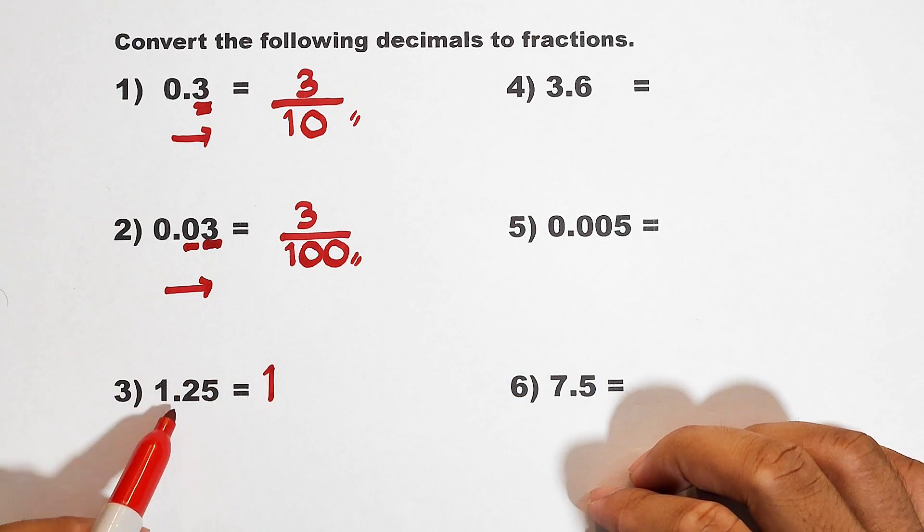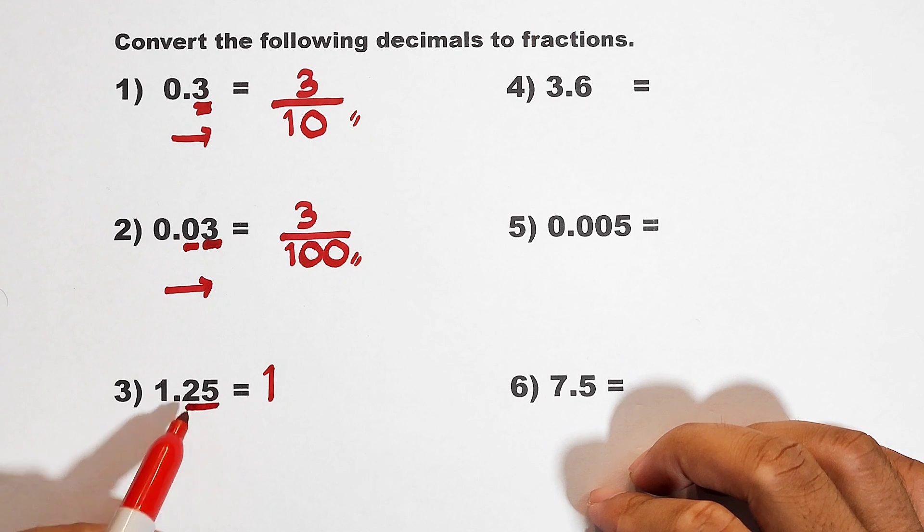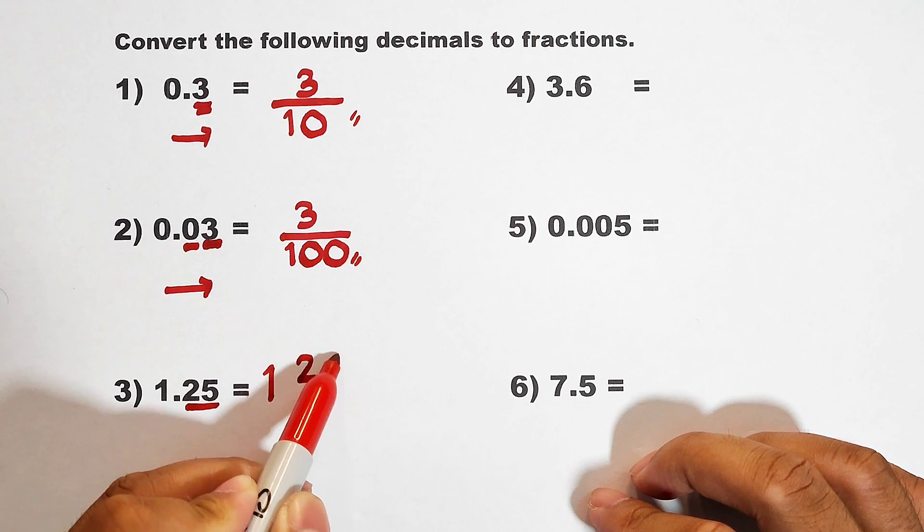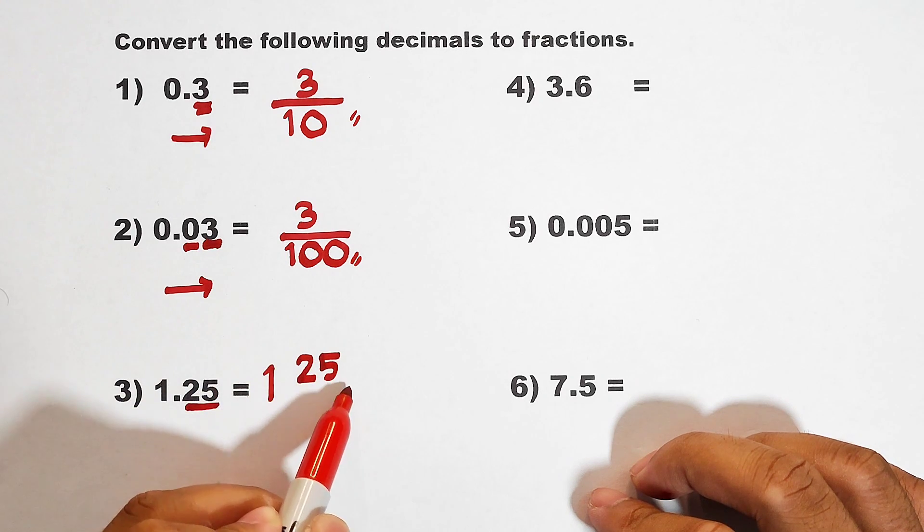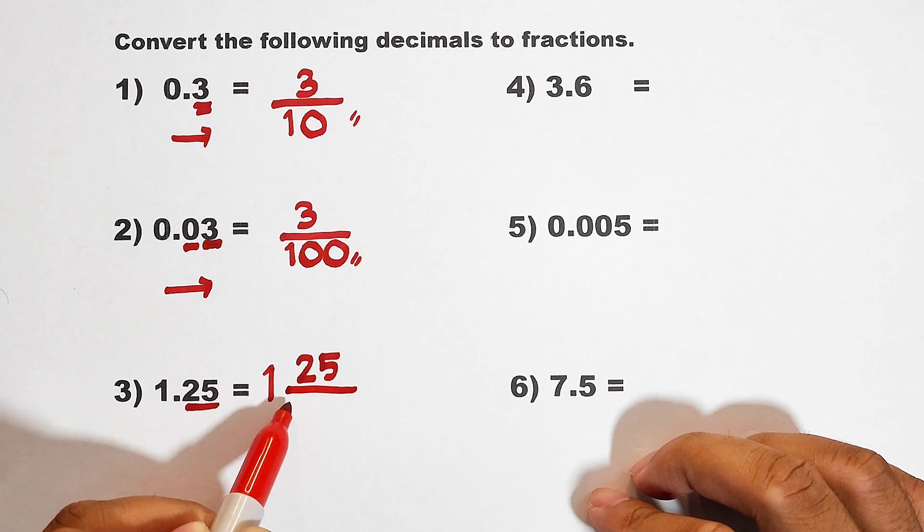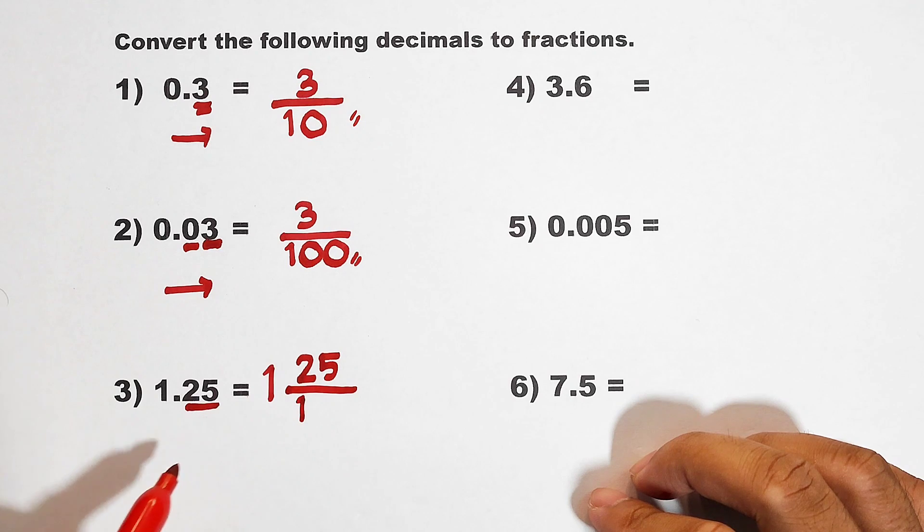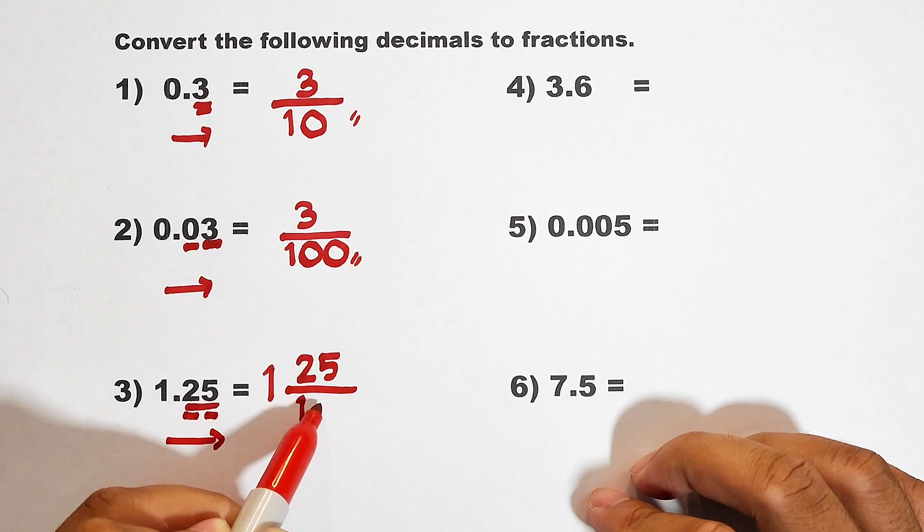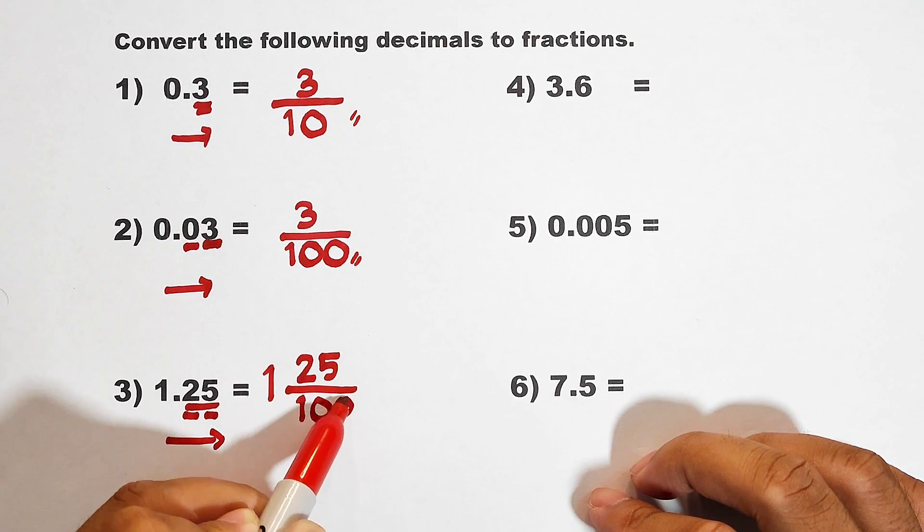Now let's convert this part. Get this number, 25, as your numerator. So you have 25. For your denominator, put a 1 here. And then what you need to do is to count the decimal places. 1 and 2. So we will put two zeros here.